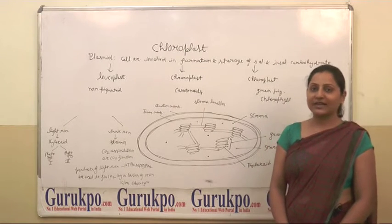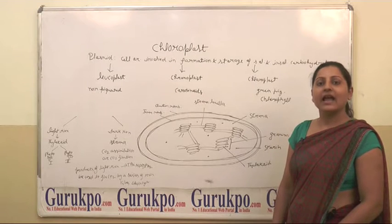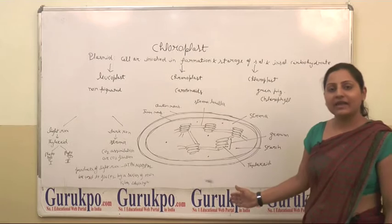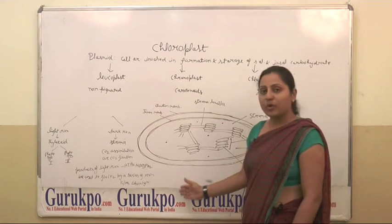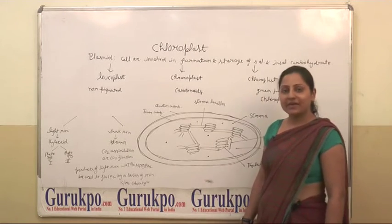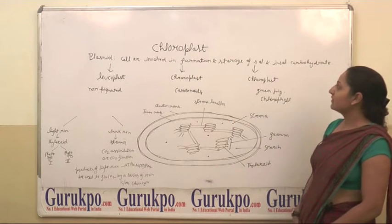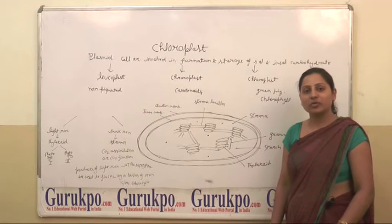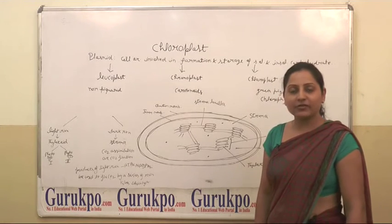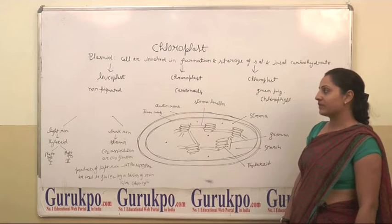Chloroplast is a photosynthetic pigment that is present in all green plants and mainly it is responsible for photosynthesis, by which the plants produce carbohydrate. So basically chloroplast is a plastid. Plastids are the organelles which are involved in formation and storage of soluble and insoluble carbohydrates. Mainly three kinds of plastids are found: the first one is leucoplast, chromoplast, and chloroplast.